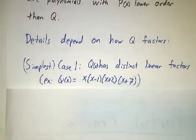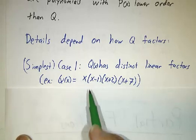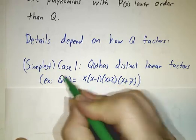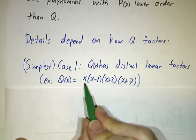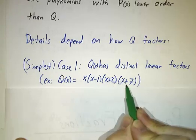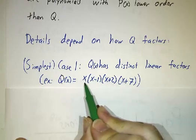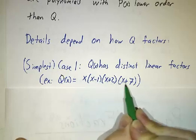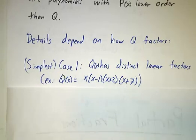So the simplest case is where you get nothing but linear terms and they're all different. So for example, if Q is x times x minus 1 times x plus 2 times x plus 7, it has four roots: 0, 1, negative 2, and negative 7, and that's all there is.